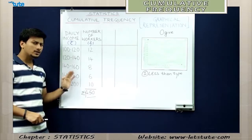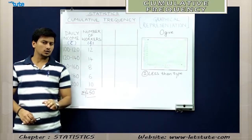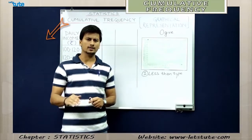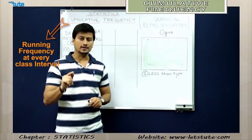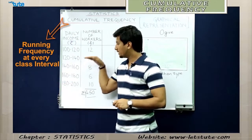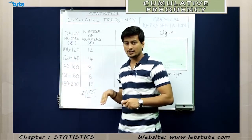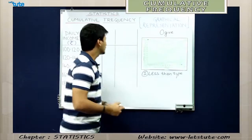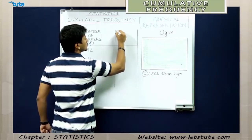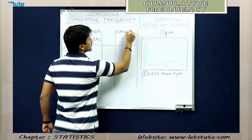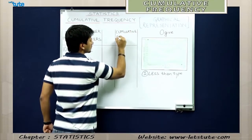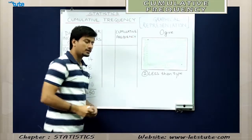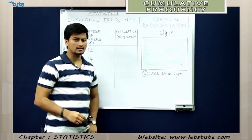A frequency distribution can be easily converted into a cumulative frequency distribution. Cumulative frequency is nothing but the running frequency — that means we add frequencies at every single stage. Let us form a column for cumulative frequency, which is also denoted as CF.